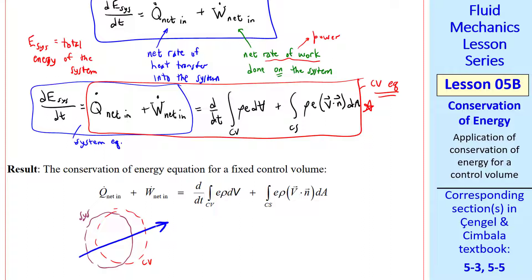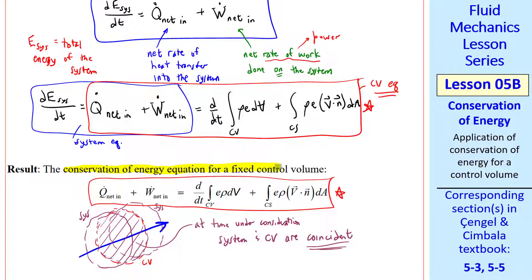If this is our fixed control volume, the system is moving through the control volume, so at some later time it's here. But at the time under consideration, the system and control volume are coincident. They occupy the same volume at this particular time. Therefore, the system equation, which applies to the system, also applies to the control volume since it's exactly the same volume. So this is our final form for the equation for a fixed control volume.